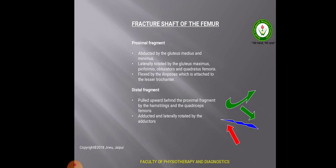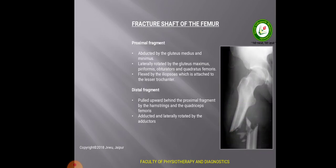If a fracture of the shaft of the femur occurs, it leads to abduction of the proximal fragment by the action of gluteus medius and minimus. The proximal fragment is laterally rotated by the gluteus maximus and flexed by the iliopsoas muscle. The distal fragment is pulled upward behind the proximal fragment by the hamstrings and quadriceps femoris, and is also abducted and laterally rotated by the adductors.